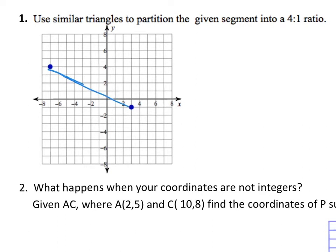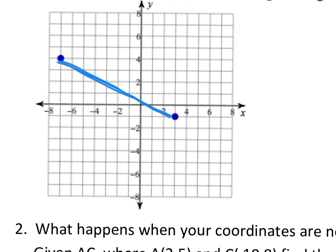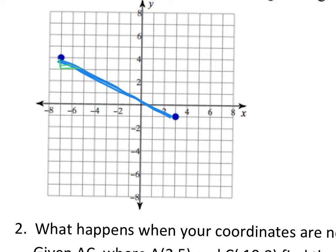We're connecting points here and making a segment, then trying to make it into a ratio of four to one. One option is to literally count and walk the slope as you would in algebra class. I go down one and over two — down one and over two — that's four times. Those four stair steps put me at the point (1, 0), and there's one more stair step left: down one and over two. So I went a ratio of four steps to one step, giving me a ratio of four to one.